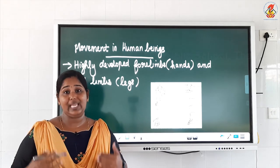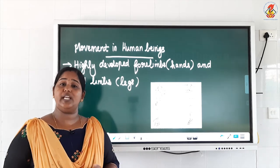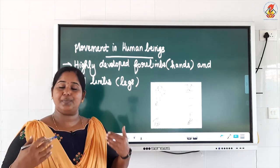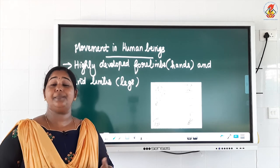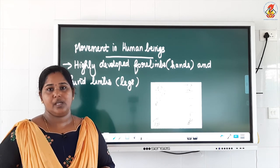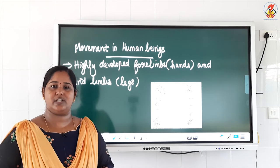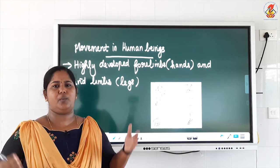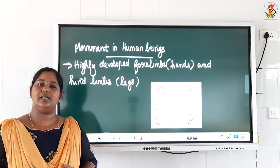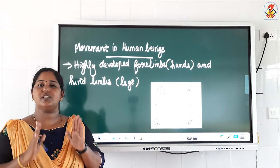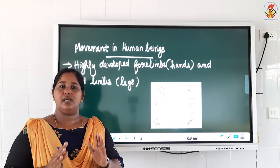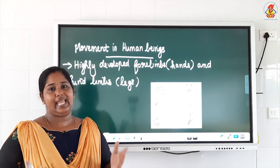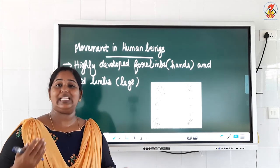Have you seen any wild animals going to work in a factory? No — we are adapted to live by working and earning. The modifications or adaptations in the body of animals are related to their habitat — it can be the way they grow, the way they eat, the way they do work, and so on. So these are the feeding and movement in animals.